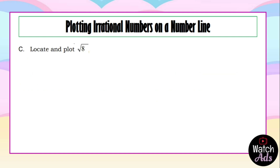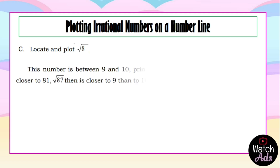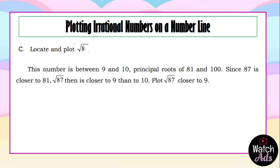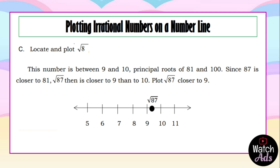Next example: locate and plot the square root of 87. This number is between 9 and 10, which are the principal roots of 81 and 100. Since 87 is closer to 81, the square root of 87 is closer to 9 than to 10. We plot the square root of 87 closer to 9, as illustrated on the number line.